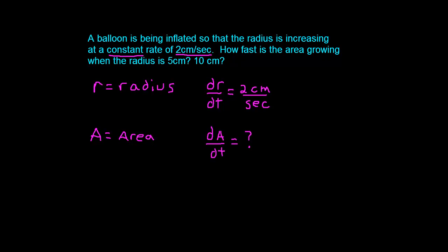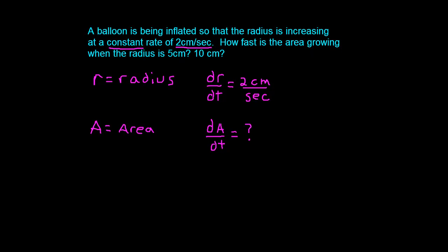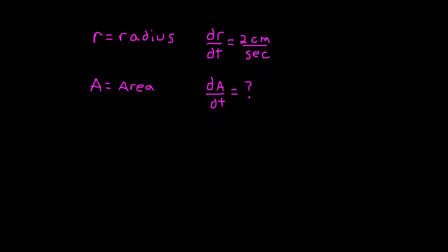Okay, the next step in a related rates problem, once you've identified all of your unknowns and your constants, is you try to relate your variables in an equation. Okay, and the equation that's going to relate the area in the radius is the area of a sphere. And the area of a sphere is 4πr².